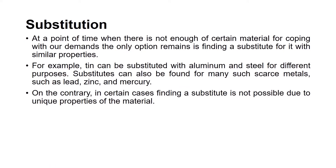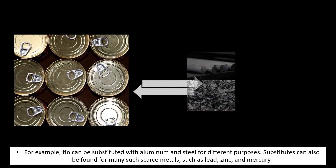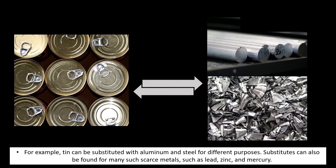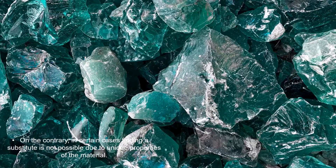That is why we talk about substitution. If there is not enough of a certain material to cope with demand, the only option remaining is finding an alternative or substitute with similar properties. For example, tin can be substituted with aluminum and steel for different purposes. Substitutes can also be found for many scarce materials such as lead, zinc, and mercury. However, in certain cases finding a substitute is not possible due to unique properties — for example, platinum and other metals used as catalysts in chemical processes, and mercury, which is the only liquid densest metal.